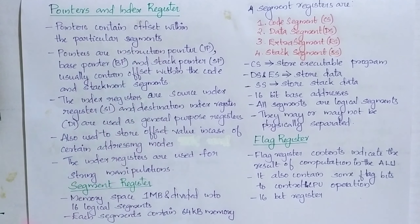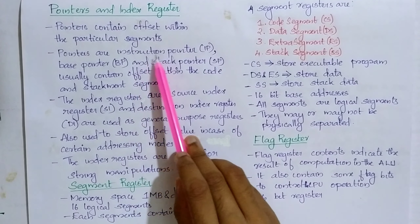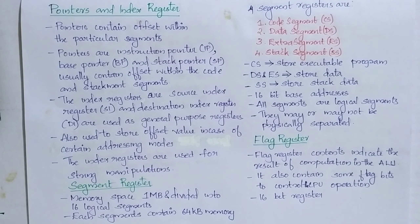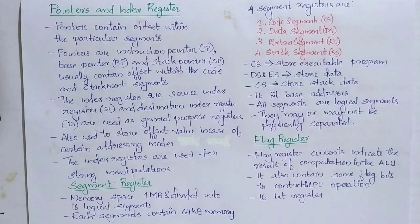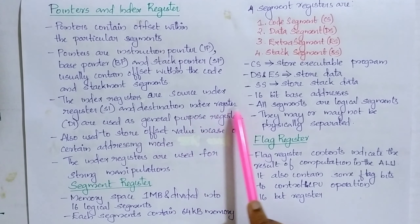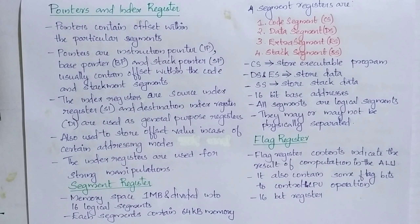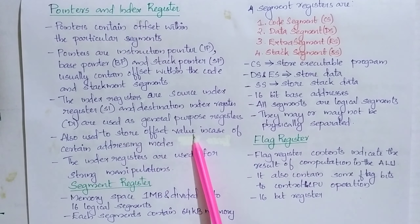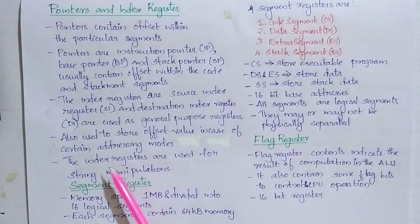Pointers contain offsets within a particular segment. There are three types of pointers: instruction pointer, base pointer, and stack pointer, which usually contain offsets within the code and stack segments. The index registers are SI (source index register) and DI (destination index register). They are used as general purpose registers, to store offset values for certain addressing modes, and also used for string manipulations.